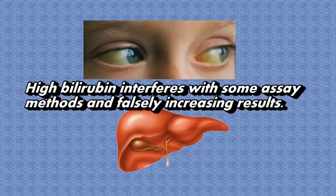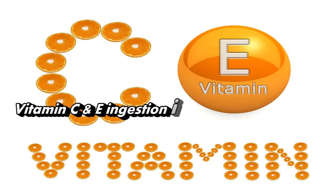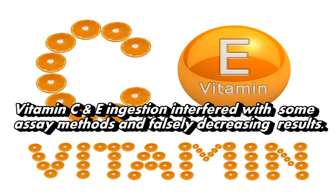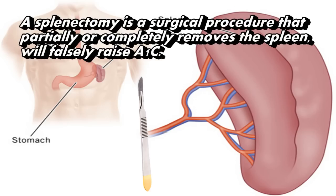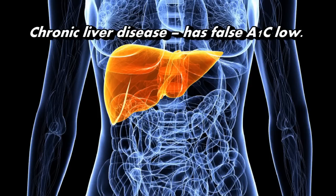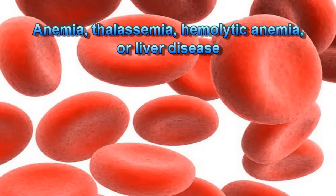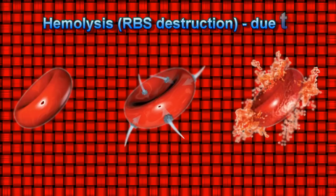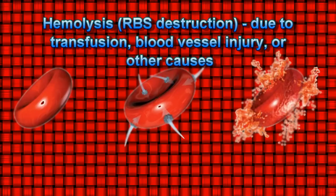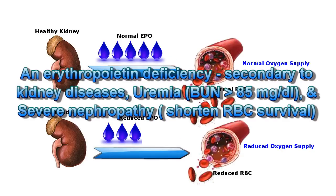Bilirubin interferes with some assay methods and falsely increases results. Aspirin interferes with some assay methods and falsely increases results. Chronic alcohol abuse produces false high results. Splenectomy — a surgical procedure that partially or completely removes the spleen — will falsely raise A1c. Chronic liver disease produces false low A1c. Causes of decreased erythrocytes leading to lower A1c include anemia, thalassemia or hemolytic anemia, liver disease, hemorrhage or bleeding, heavy menstrual periods, stomach ulcers, hemolysis or RBC destruction due to transfusion, blood vessel injury, erythropoietin deficiency secondary to kidney diseases, and uremia (BUN more than 85 mg/dL) and severe nephropathy shortening RBC survival.